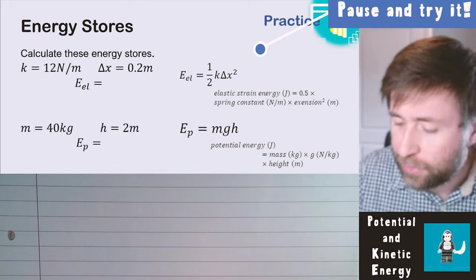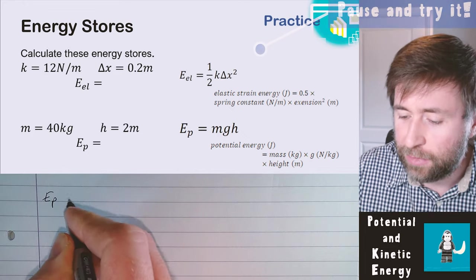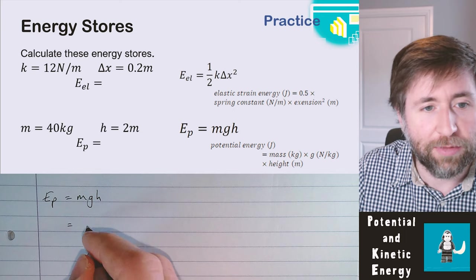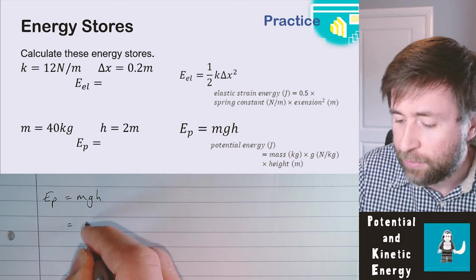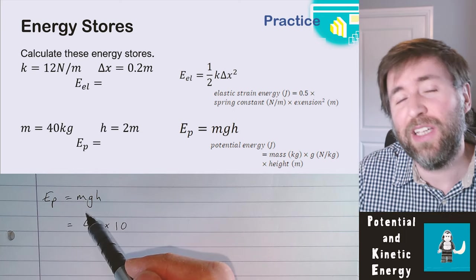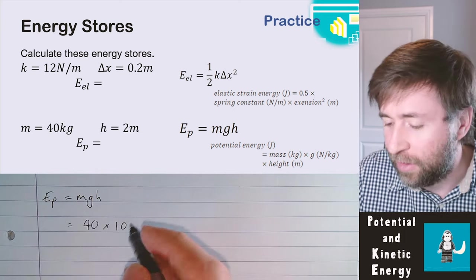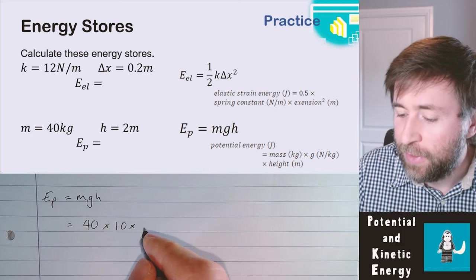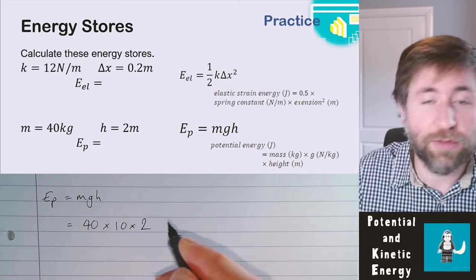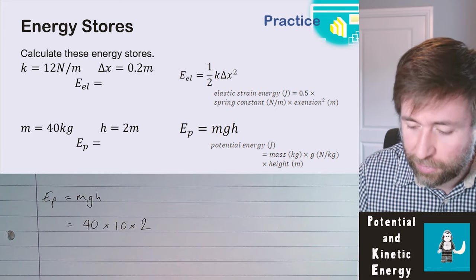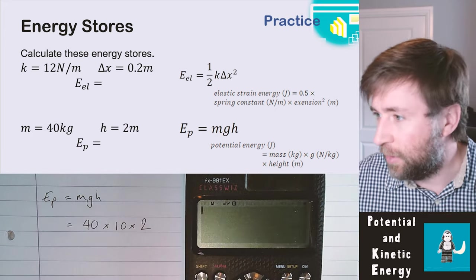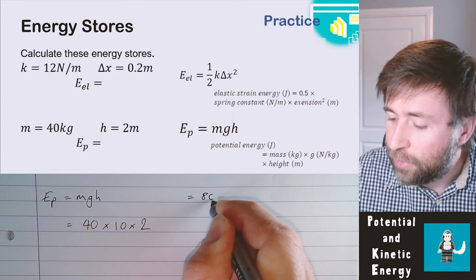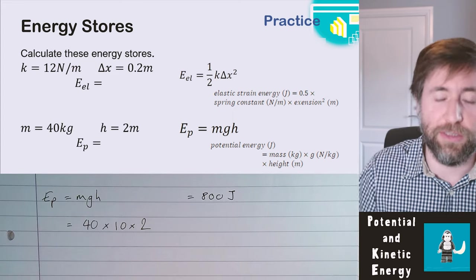For the gravitational potential energy store, always start by writing out the equation, identify the values, and substitute them in. Mass is 40 kilograms, g is 10 newtons per kilogram, height is 2 meters — all in SI units, so they go straight in. That gives 800 joules of gravitational potential energy.